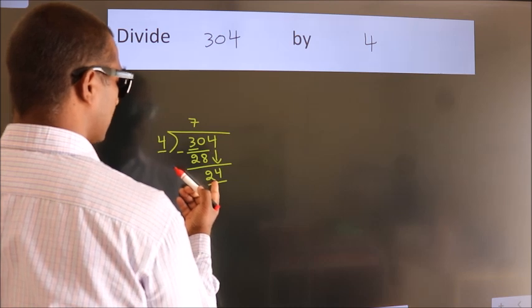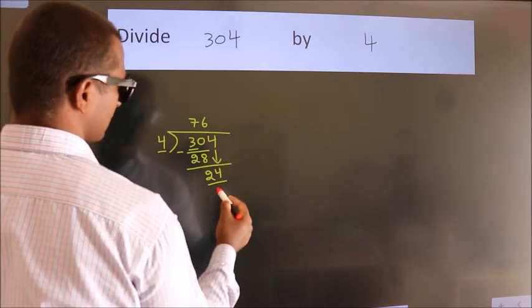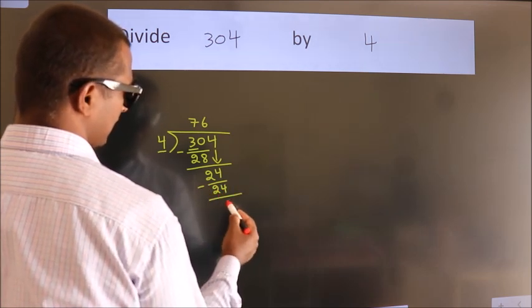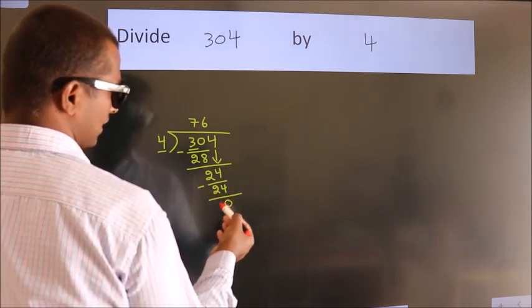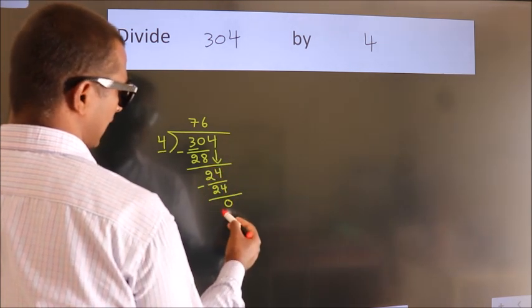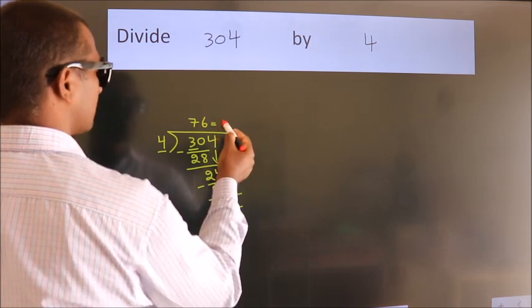When do we get 24? In 4 table. 4 sixes, 24. Now we subtract. We get 0. After this, no more numbers to bring down. And we got remainder 0. So this is our quotient.